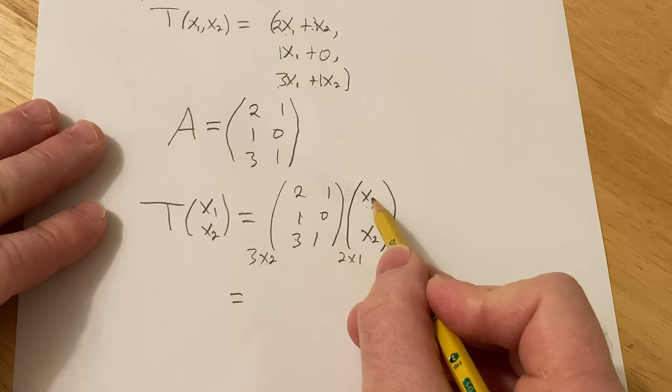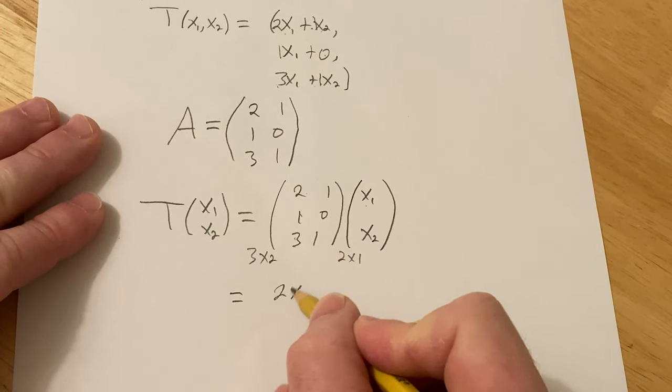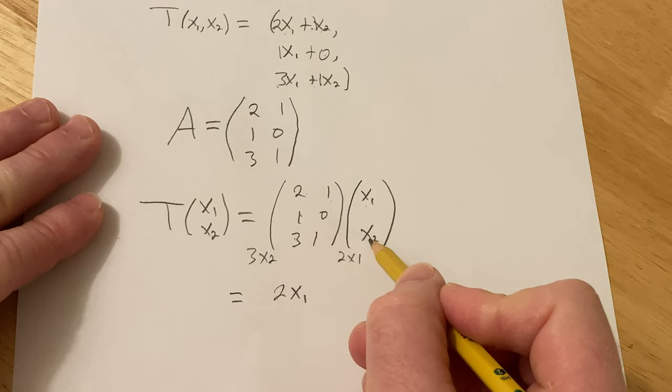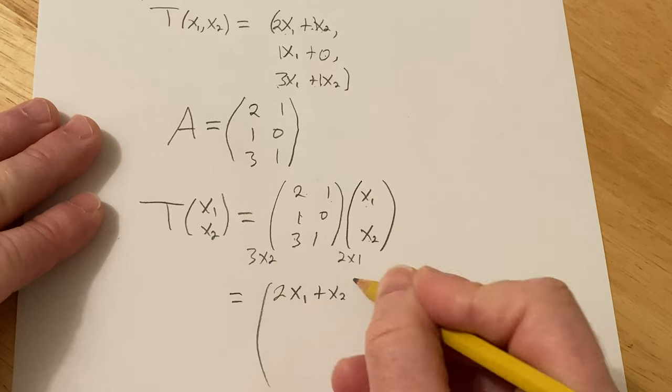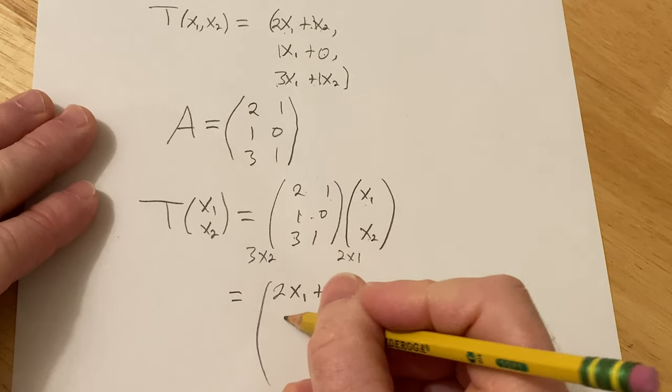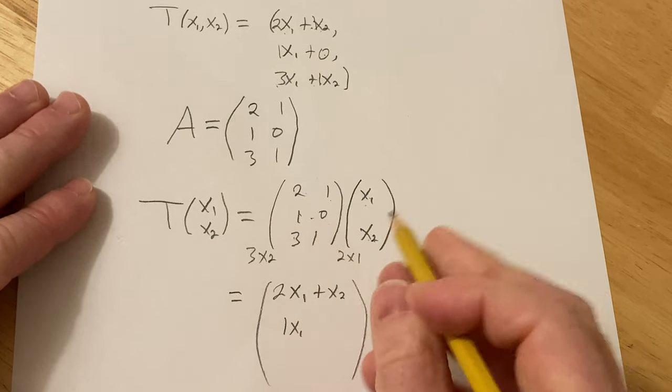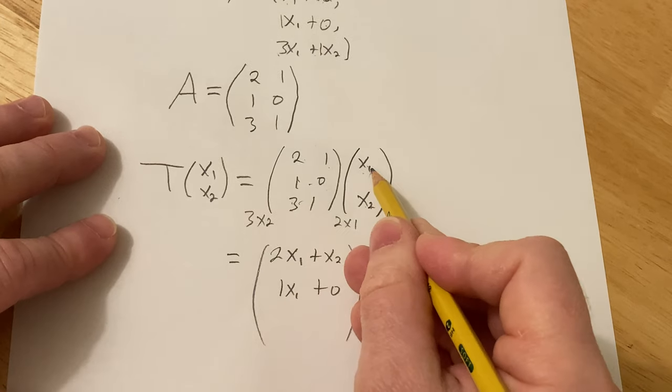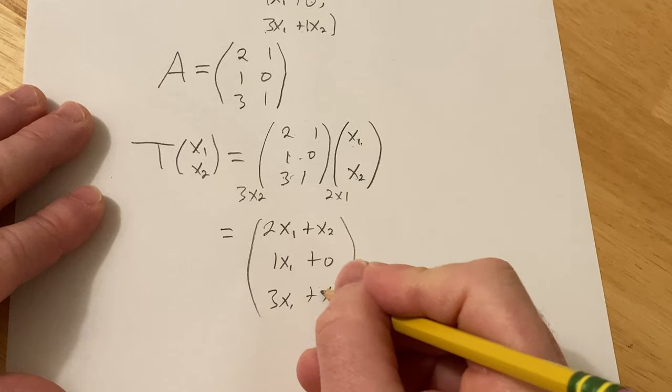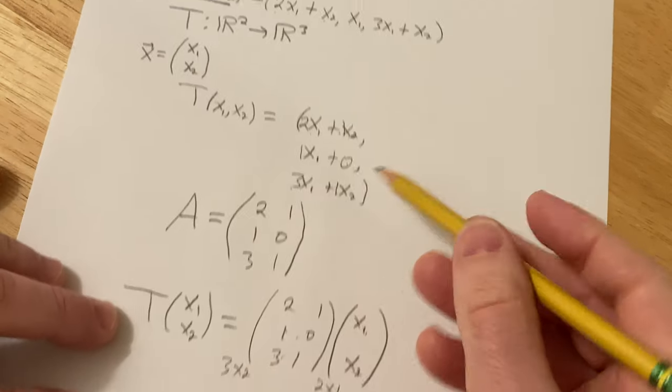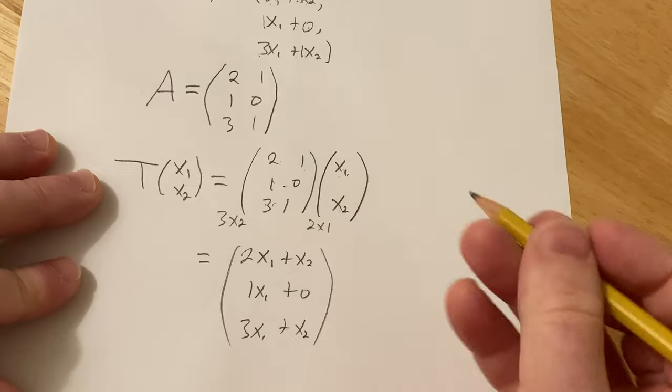2 times x1 is 2 times x1. 1 times x2 is 1 times x2, so plus that. 1 times x1, 0 times x2. 3 times x1, 1 times x2. So you see, this is exactly what we have at the beginning. So this is the same thing.